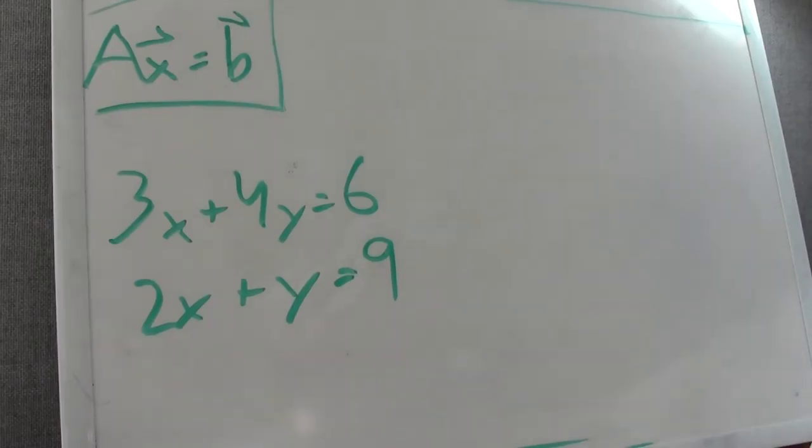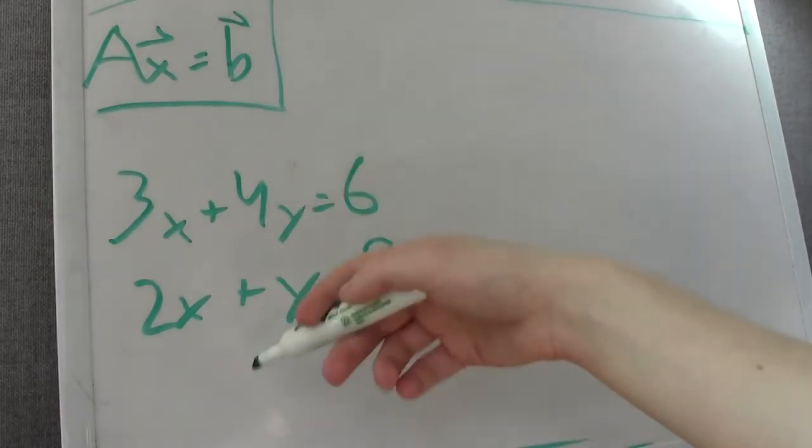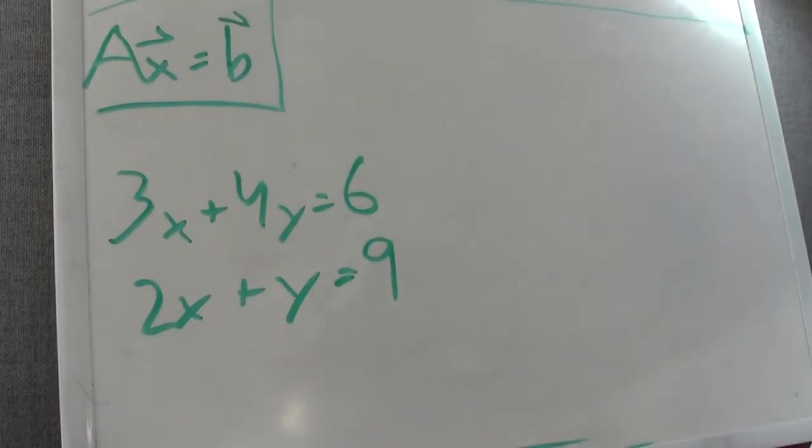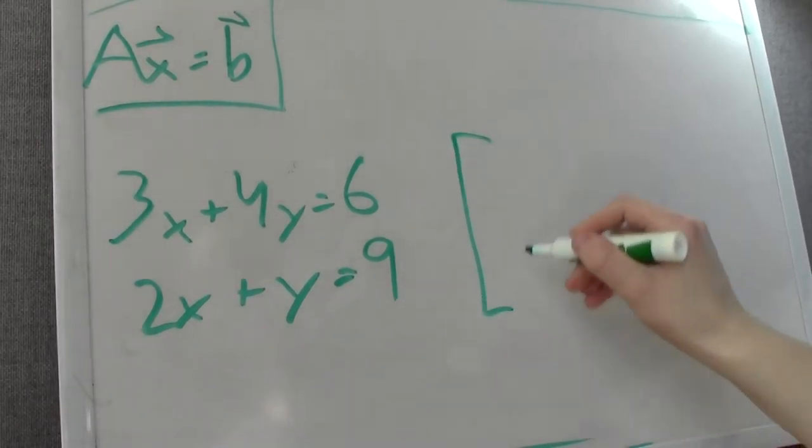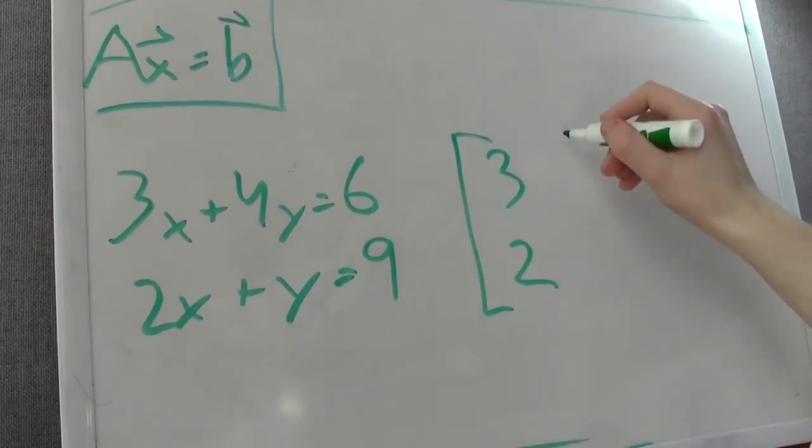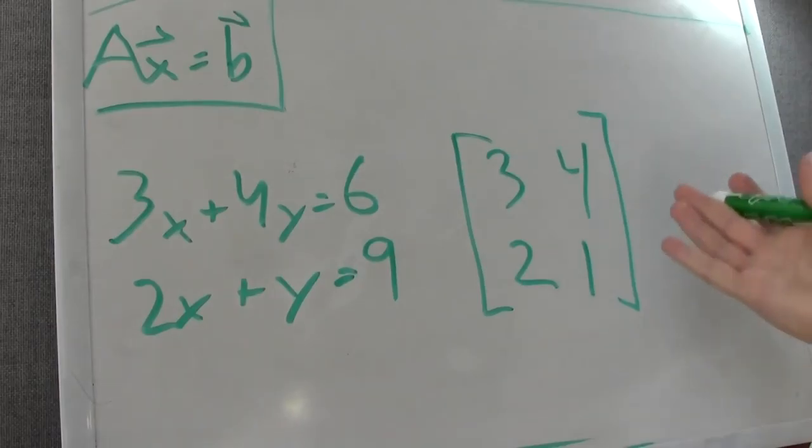So what we need is a format for working with large sets of numbers. We take these sets of equations—notice that they both have an x, they both have a y—so let's just simplify that and take that out. What we get is all the numbers.